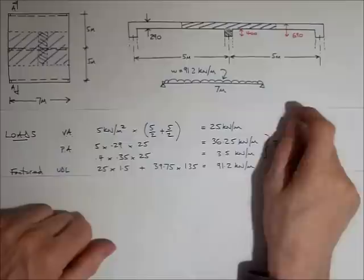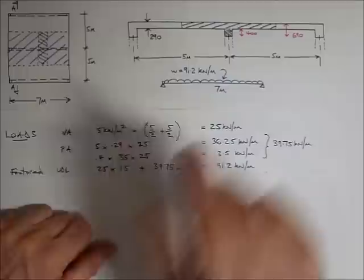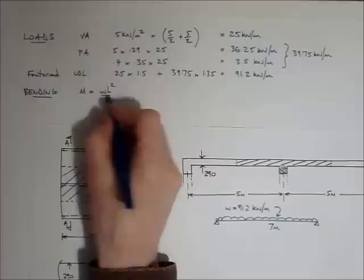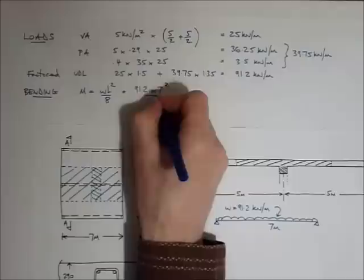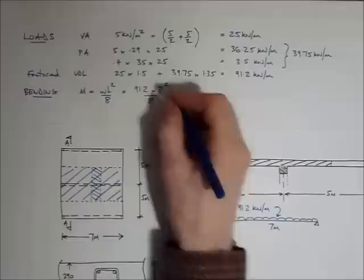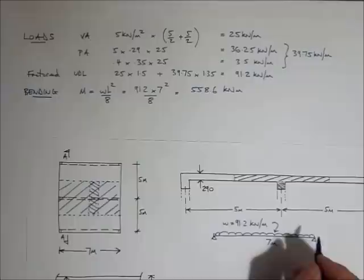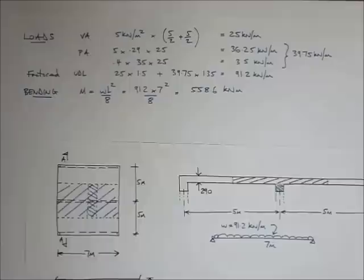That 91.2kN/m run acts on the 7m-long beam, and from this we can now calculate the bending moment in the beam. The bending moment for that UDL is WL² over 8. And W is this. So W, 91.2 times L squared, 7 squared, all divided by 8. That gives me a value of 558.6kNm. So the bending moment at mid-span of this beam is 558.6kNm.